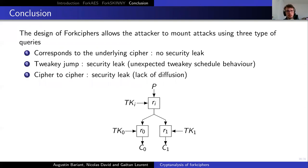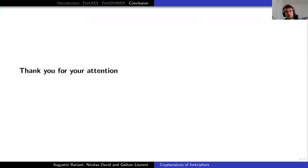As a conclusion, we can say that the design of fork cipher allows the attacker to mount attacks using three types of queries. The first one, from P to C0, corresponds to the underlying cipher. Therefore, there is no security leak. When the attacker uses queries from P to C1, there is the tweakey jump, hence there is a security leak, because there is an unexpected tweakey scheduled behavior. And when we are asking queries from cipher to cipher, there is also a security leak, because there is a lack of diffusion. Thank you for your attention.